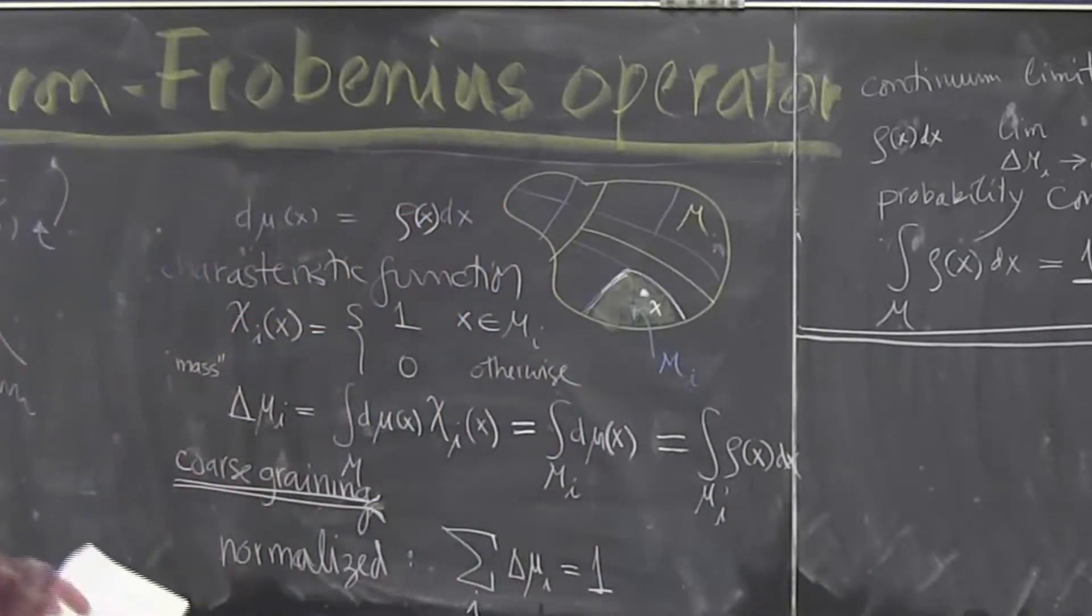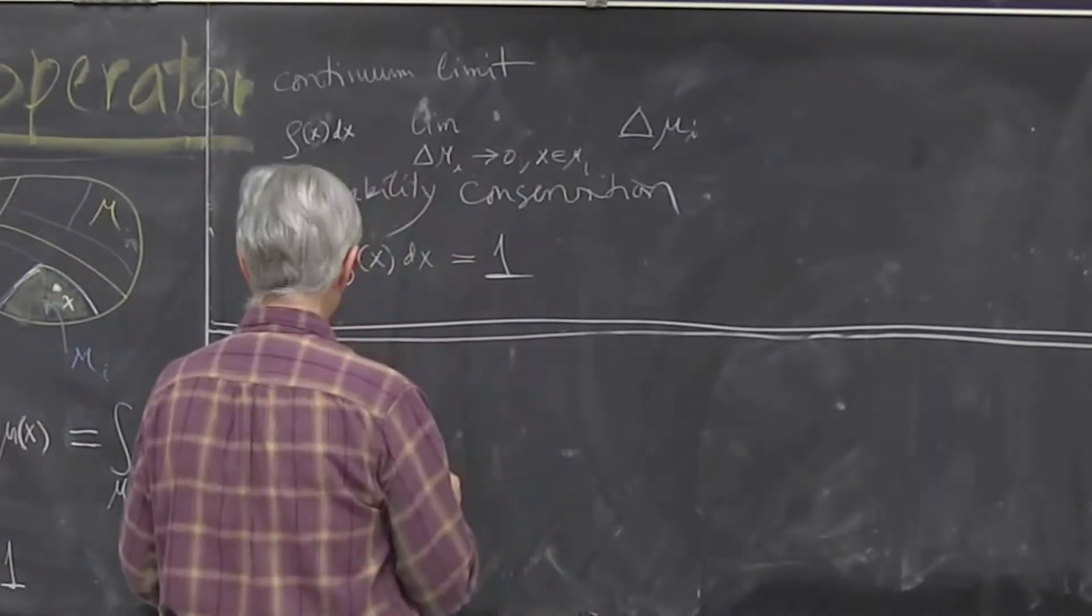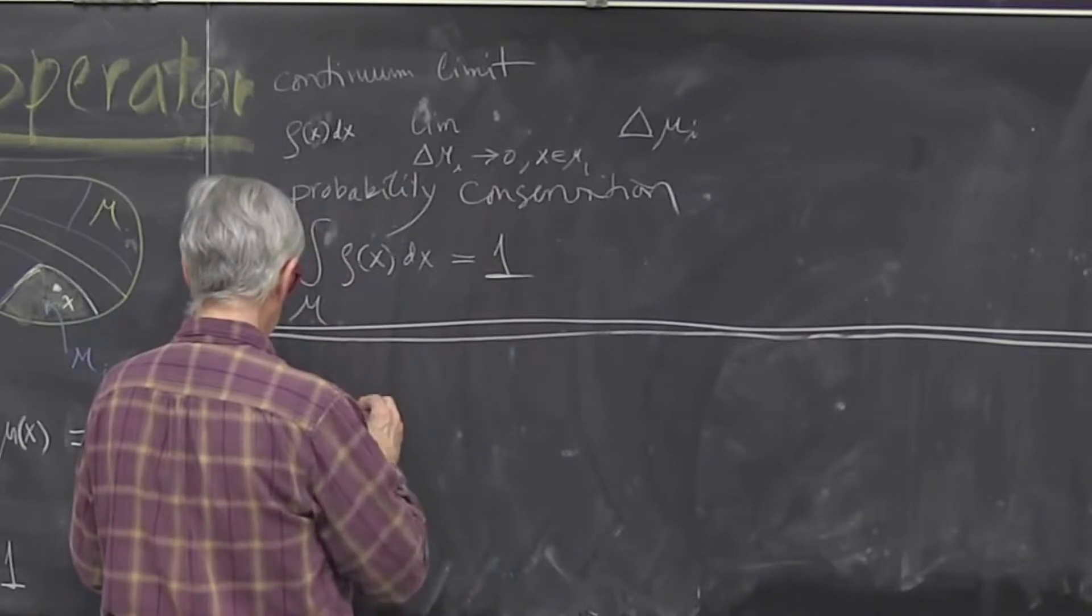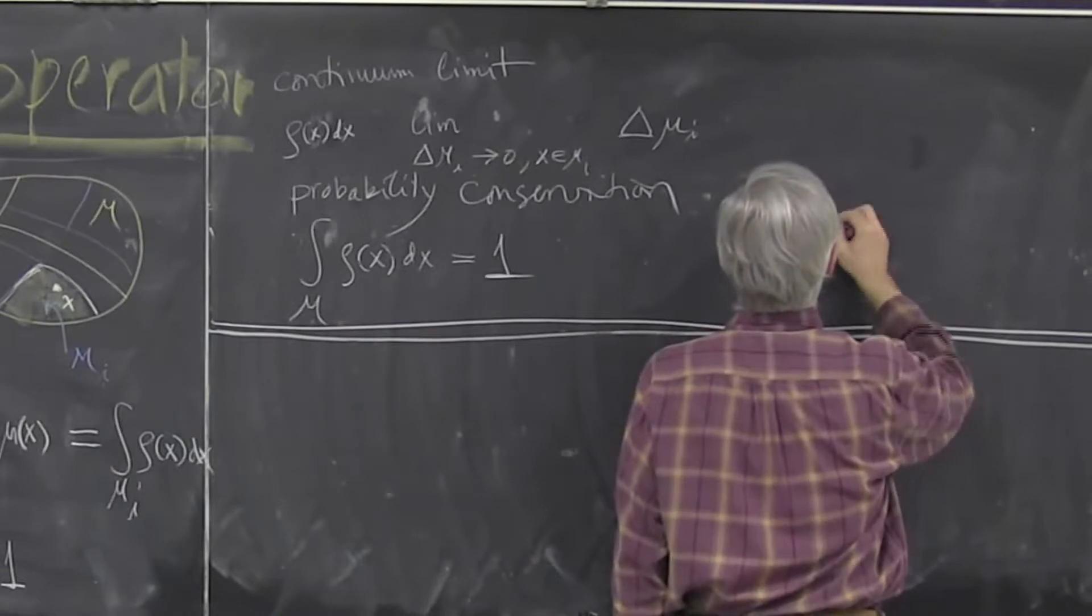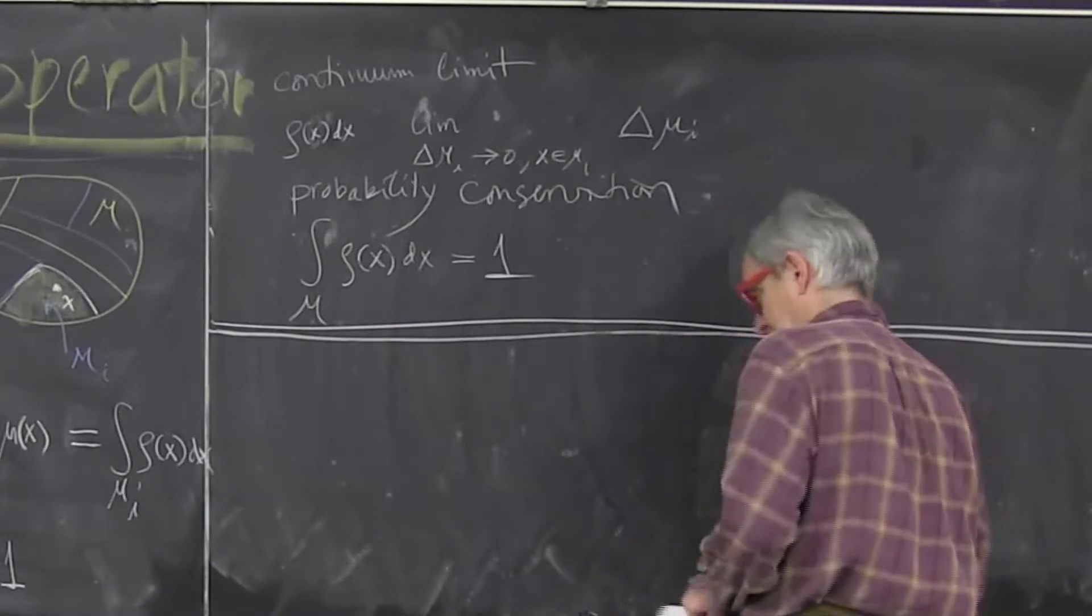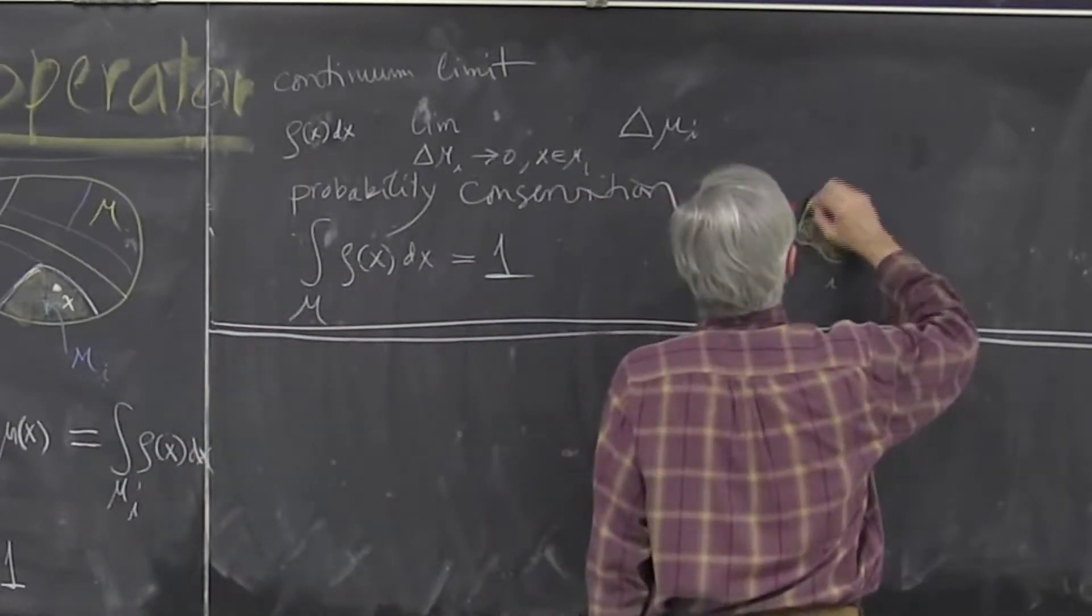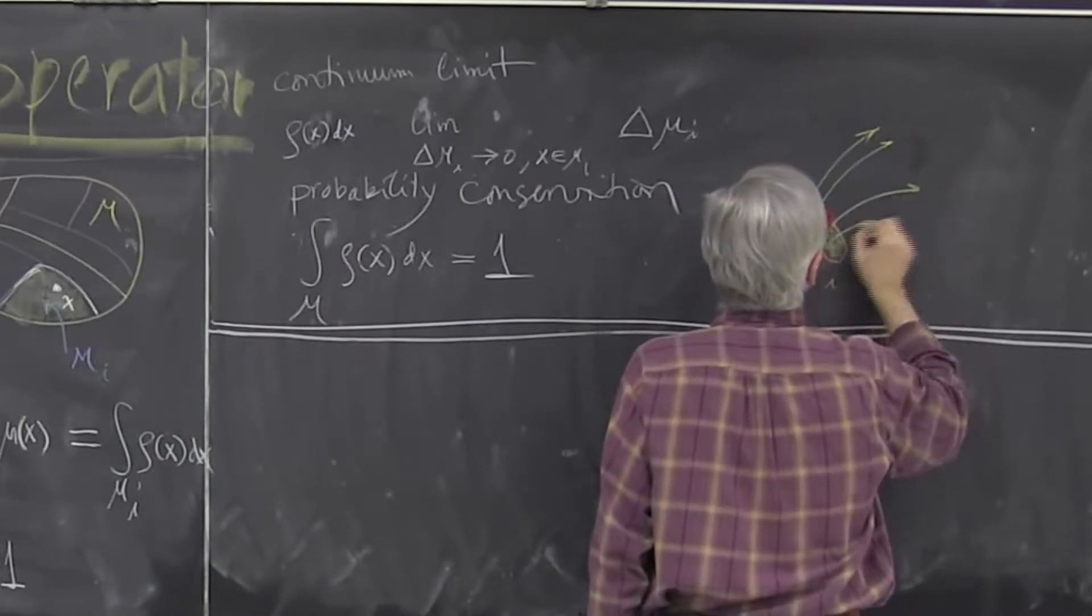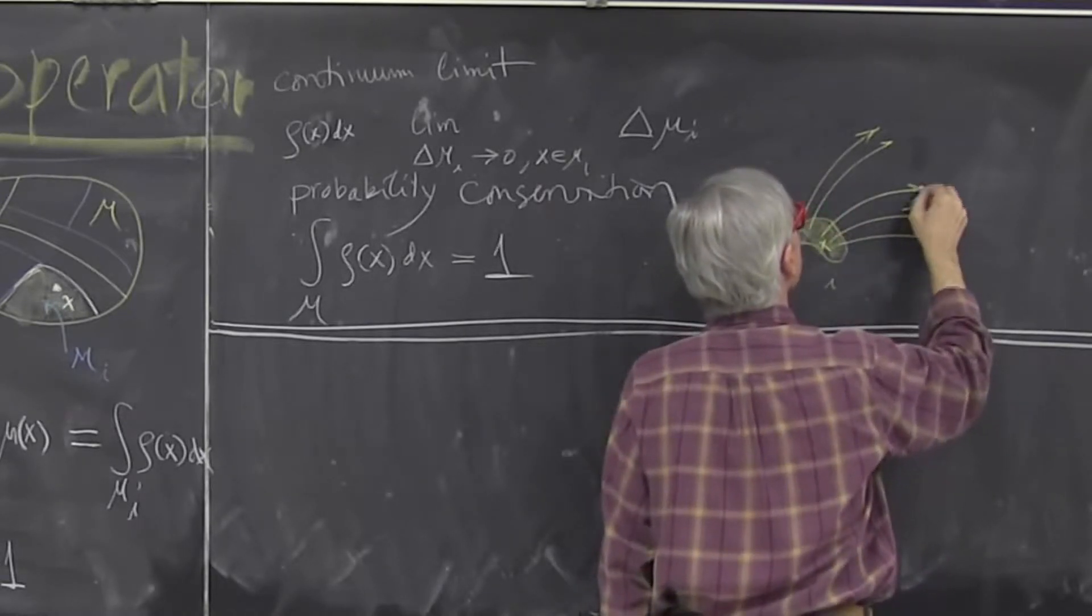So we are starting to say mechanics describes what happens to every initial point. But if you're interested in what happens to everybody, we have to start thinking globally, and that's a bridge to global thinking. And how you do it, it's kind of silly simple. So consider what happens if I start someplace in my region M. I let evolution work.